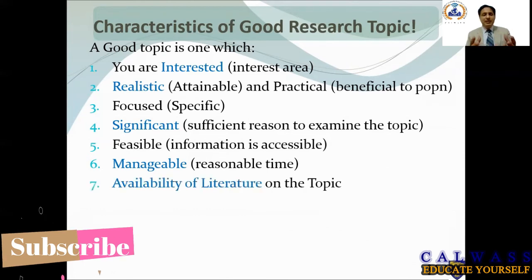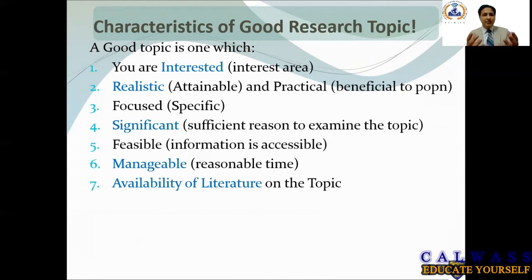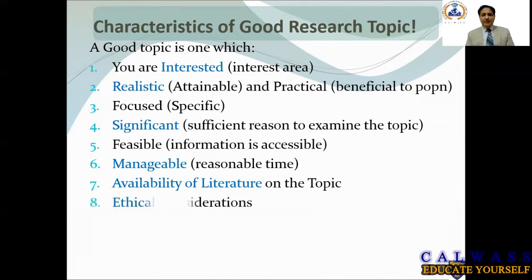The seventh characteristic is availability of literature on the topic — whether there is available literature and what kind, whether it is proper literature or gray literature. By the way, we will make another video on how to conduct a literature review properly and also a systematic literature review. The eighth point is ethical consideration — you need to consider whether the topic is ethically right. The topic should be ethically sound.